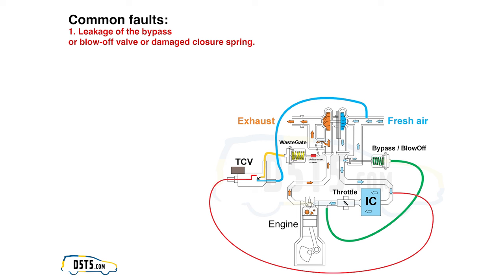The difference between a blow-off valve and a bypass valve is that the bypass valve redirects excess pressure before it reaches the turbocharger, whereas the blow-off valve releases excess pressure out of the system into the atmosphere, which creates that racing sound.